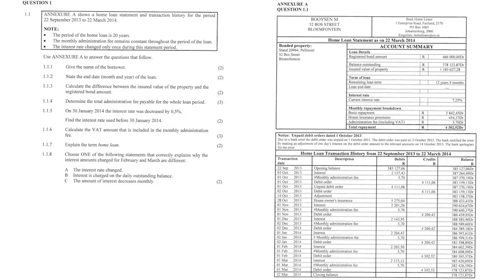Annexure A shows a home loan statement and transaction history for the period 22 September 2013 to 22 March 2014. Use Annexure A as given here to answer the questions that follow.